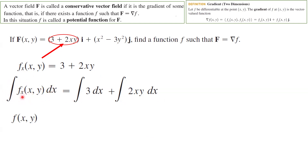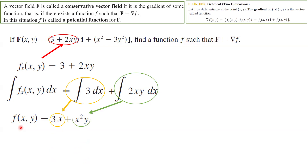The integral and the partial derivative with respect to x intuitively cancel out, so you end up with the function f on the left side. On the right-hand side, the integral of 3 dx is 3x, and the integral of 2xy dx is x²y. The constant of integration is a function in y, g(y), because if you take the derivative with respect to x, this function in y disappears.